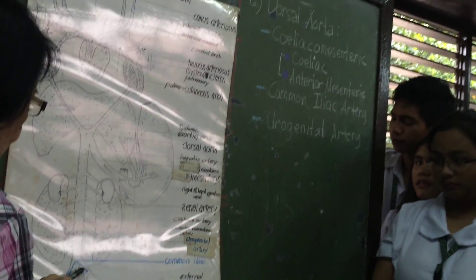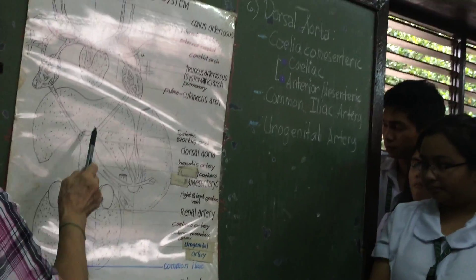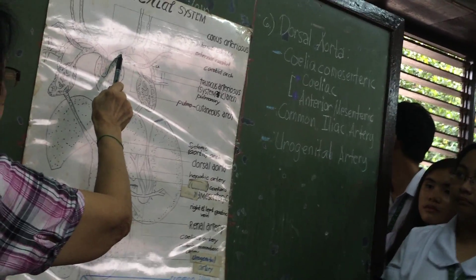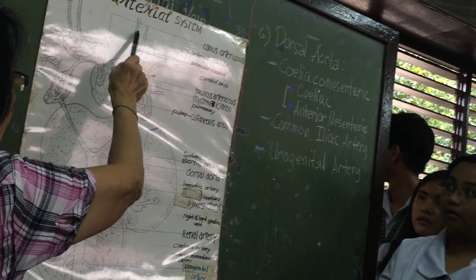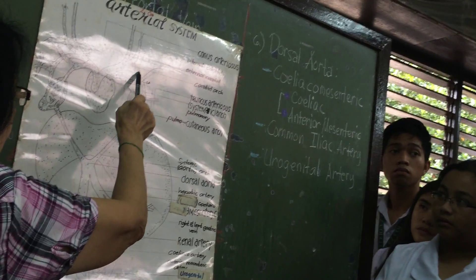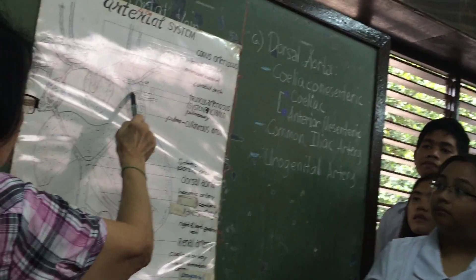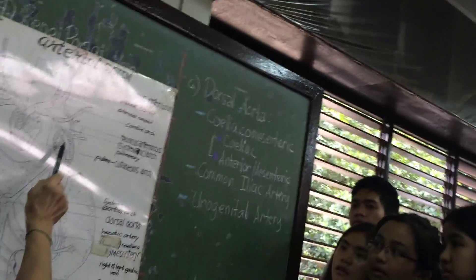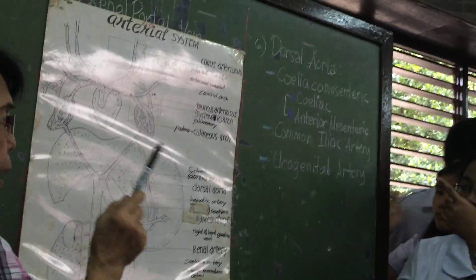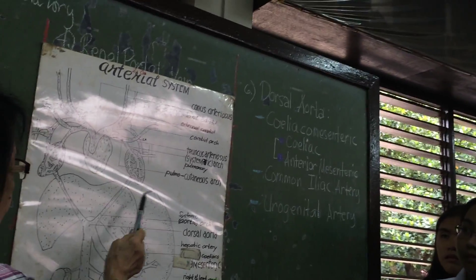At the end of your dorsal aorta is the common iliac, which splits into two — one going that way, the other one going this way. So again, from the conus, blood goes to the truncus arteriosus, which branches into the common carotid artery, then the systemic artery, and then the third one — the pulmocutaneous. The pulmocutaneous leads to two parts: a branch going to the skin and the other branch going to the lungs.